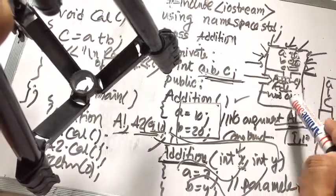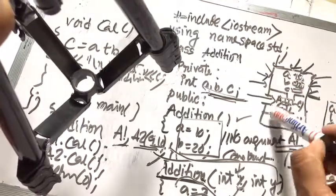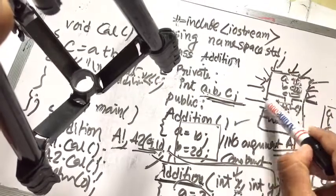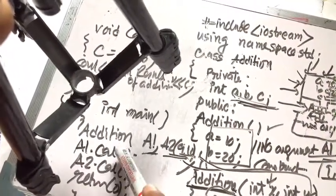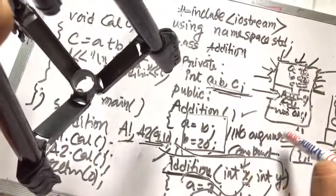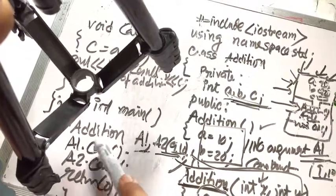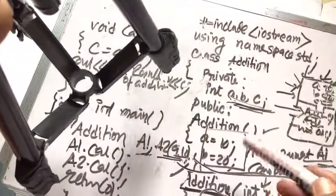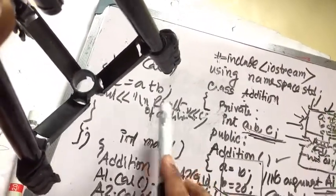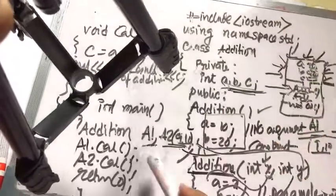When a1.cal is called, it uses a (initialized to 10) and b (initialized to 20). The public section can access the private members through member functions. So c = 10 + 20 = 30, and the result is printed as 30.